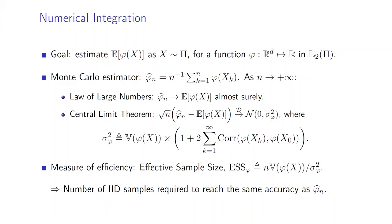From the theory of Markov chains, we know that the empirical average across the chain, noted φ̂_n here, satisfies a law of large numbers and the central limit theorem under mild assumptions, with respect to an asymptotic variance σ²_φ that can be decomposed into two terms: the first one being the variance of φ under π, and the second one being the sum of autocorrelation functions.